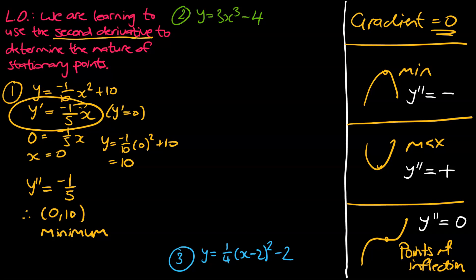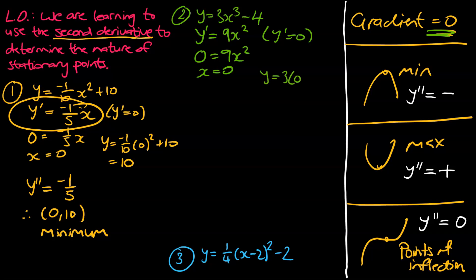You may like this method more than the table method. Let's go into the green pen and differentiate the next equation: y equals 3x cubed minus 4. Three times 3 gives us 9, and we reduce the power by 1, so y dash equals 9x squared. At the stationary point the gradient equals zero, so 0 equals 9x squared. Dividing by 9 gives zero, and the square root of zero is zero, so x equals zero. Substituting back: y equals 3 times 0 cubed minus 4, which equals negative 4. So the coordinate of the turning point is (0, -4).